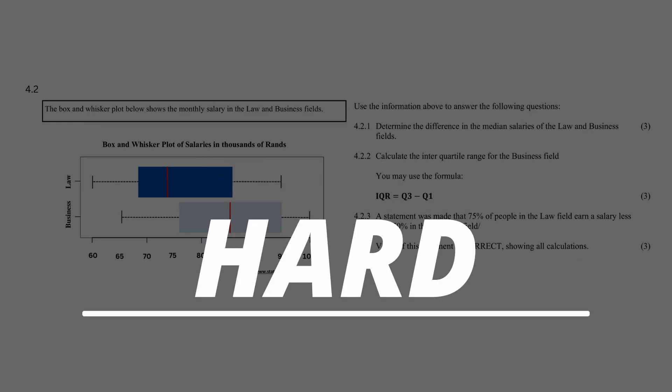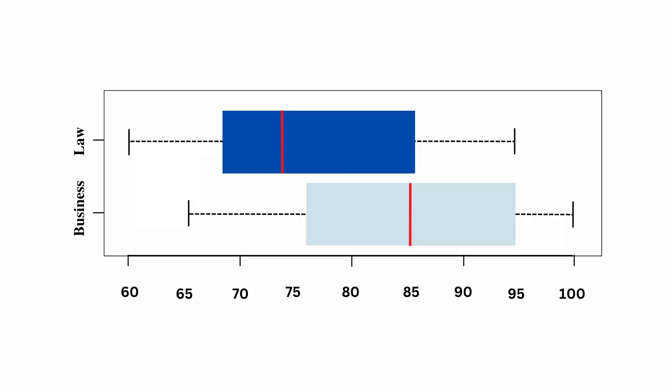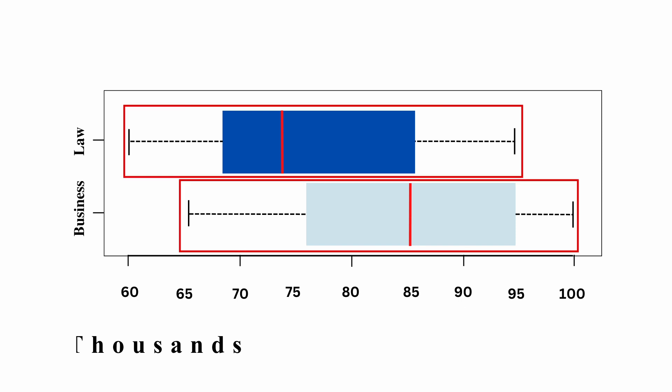Let's take a look at this question in detail to see why. You are given two box and whisker plots of the salaries in thousands of rands for the law and business fields.